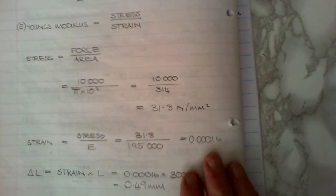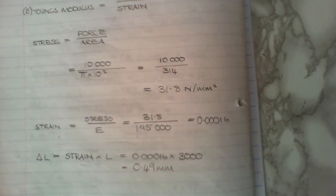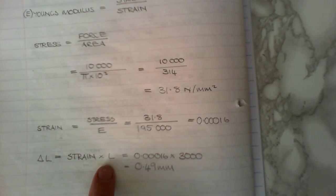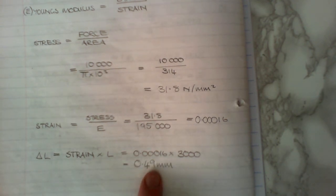If it's not a small number, you've done something wrong. And what they're looking for is how much that bar has been stretched. Delta L equals strain, well applied by the original length. And there we go, job done.